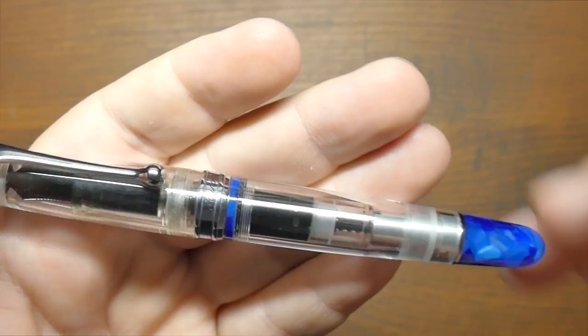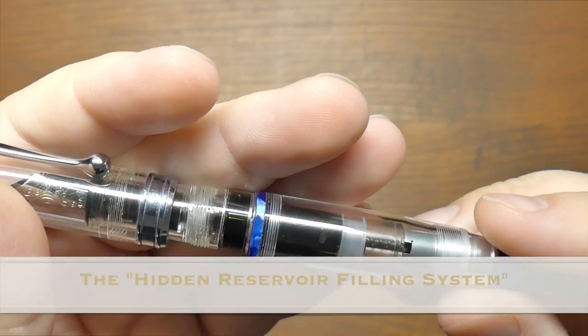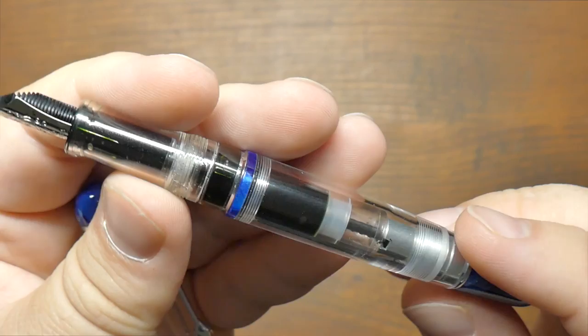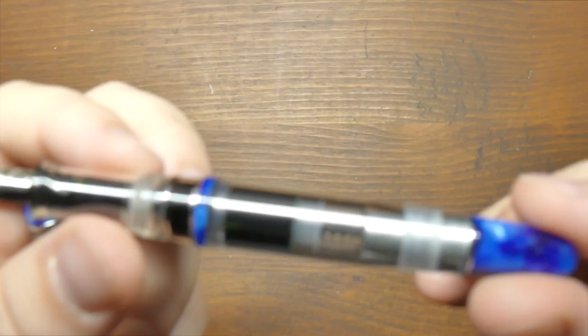It's a piston filler, of course, but it also has this sort of secret ink tank in here that holds a little bit of extra ink if you run out. So this is pretty cool, and in fact, I'm going to clean this out and I'll show it to you empty as well. But I wanted to go ahead and start out the video with ink in the pen, just to show it sloshing around in there.